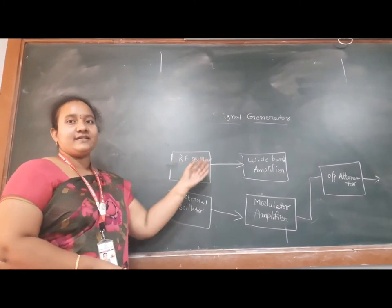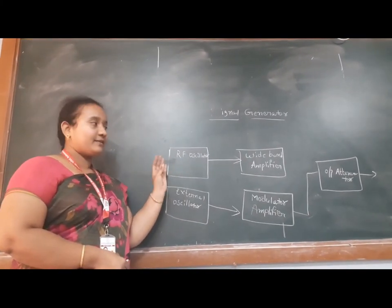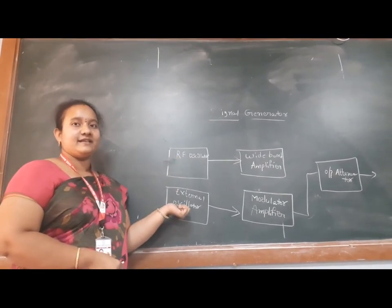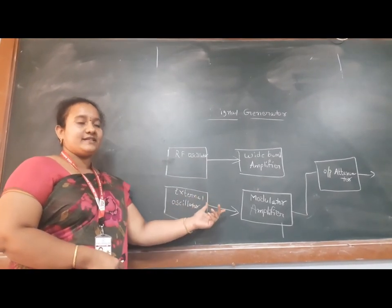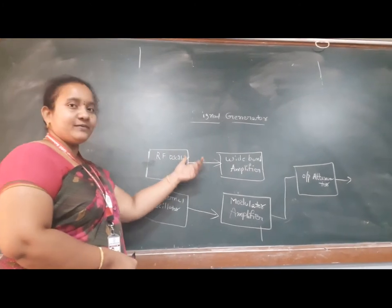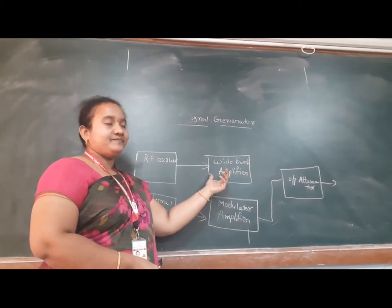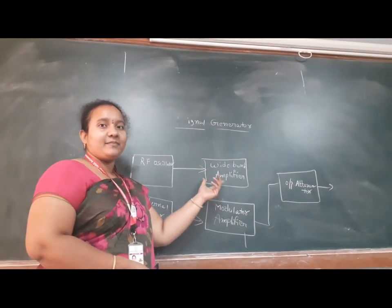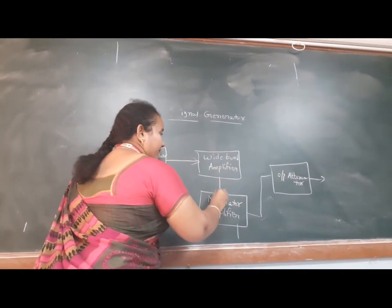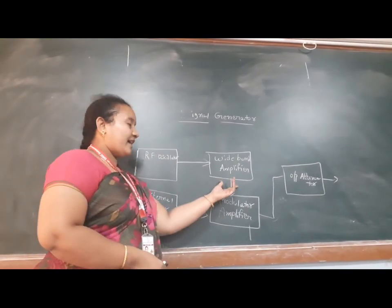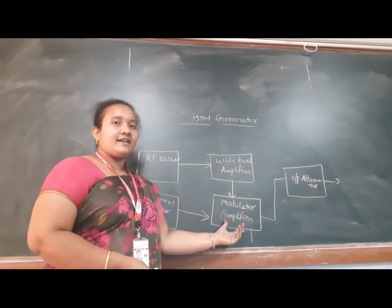The RF oscillator generates the carrier signal. The external oscillator is used for generating the message signal. So finally we are getting two signals. The carrier signal will be amplified by using the wideband amplifier. The wideband amplifier is a type of amplifier which amplifies the signal, and we get an amplified version of the carrier signal. Then the carrier signal and message signal are both given as input to the modulator amplifier.